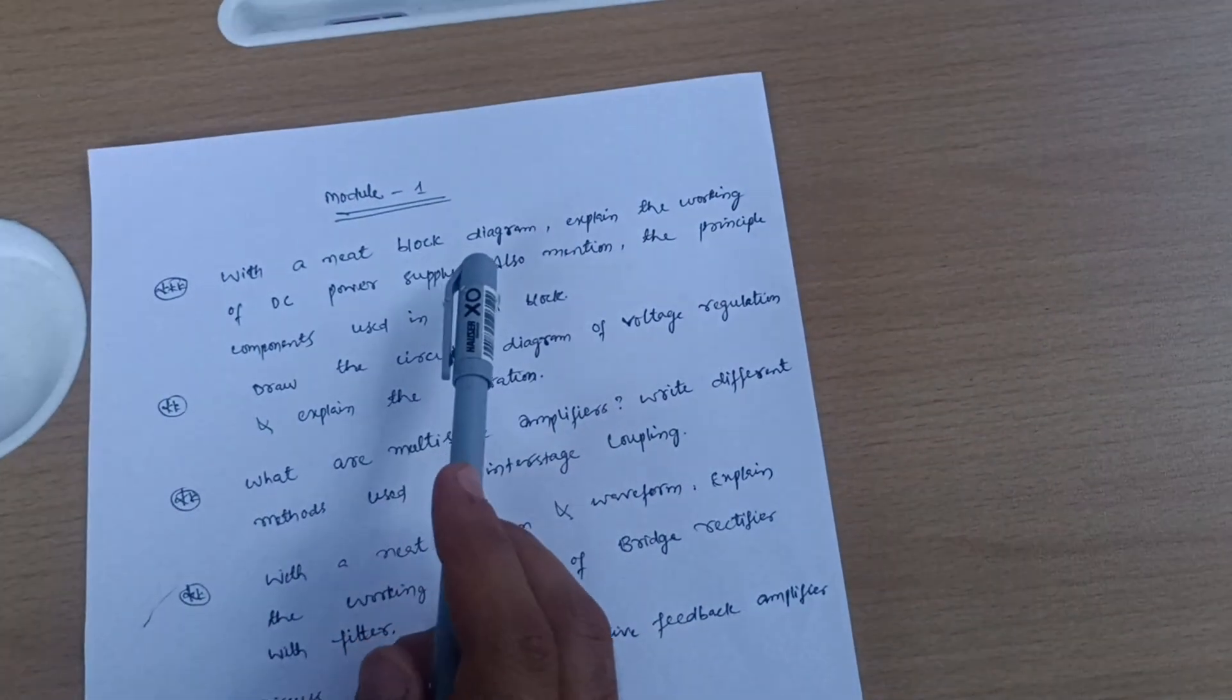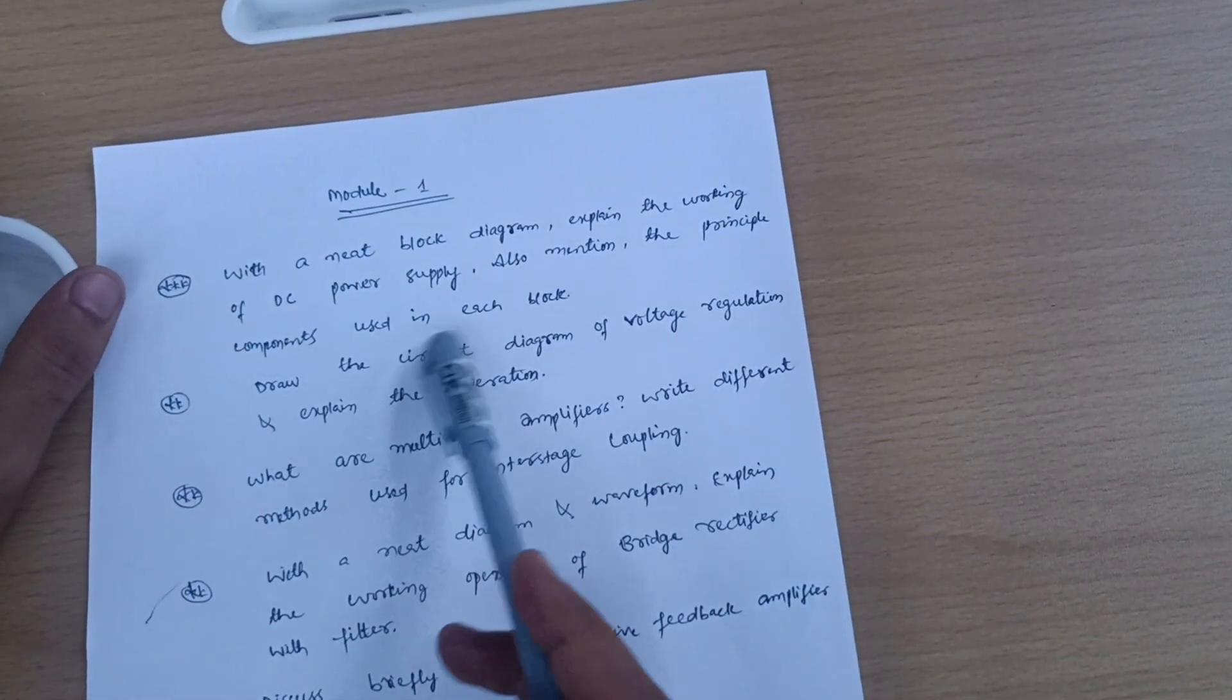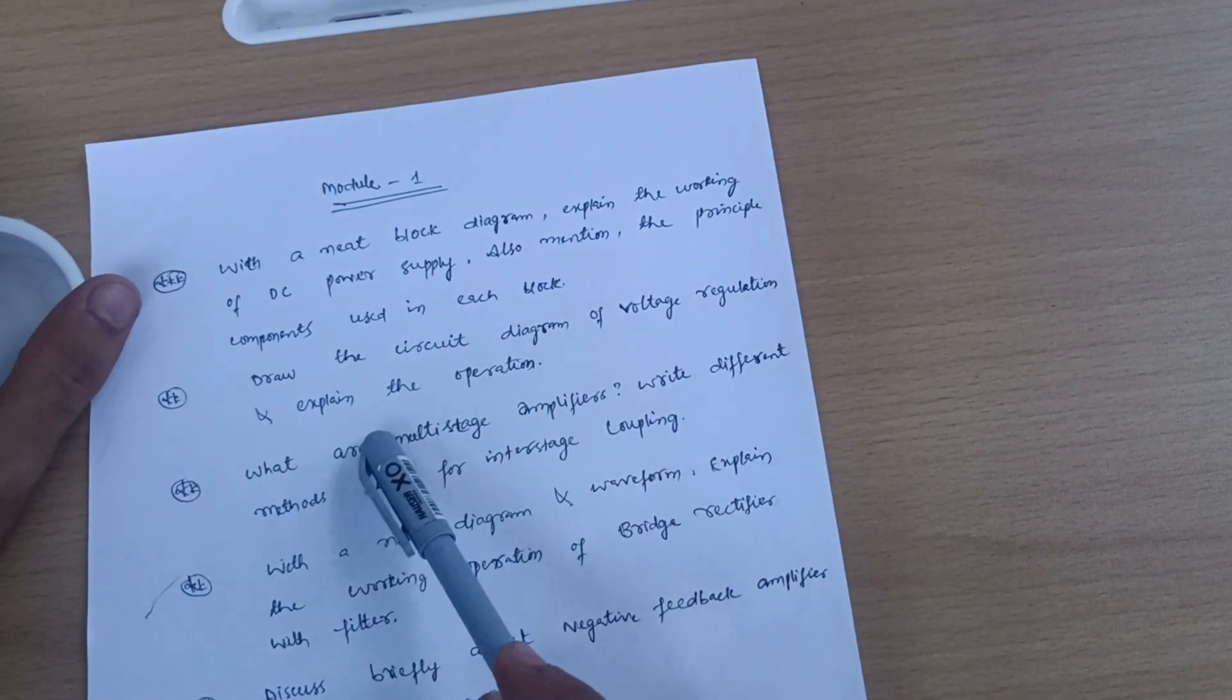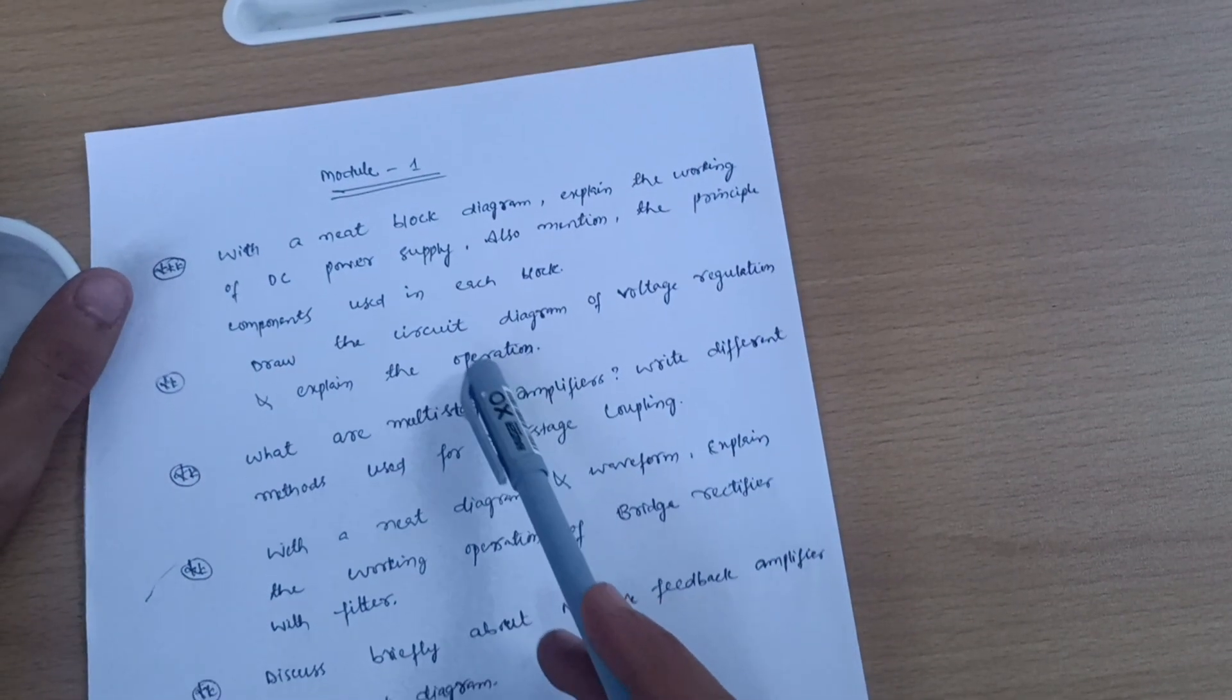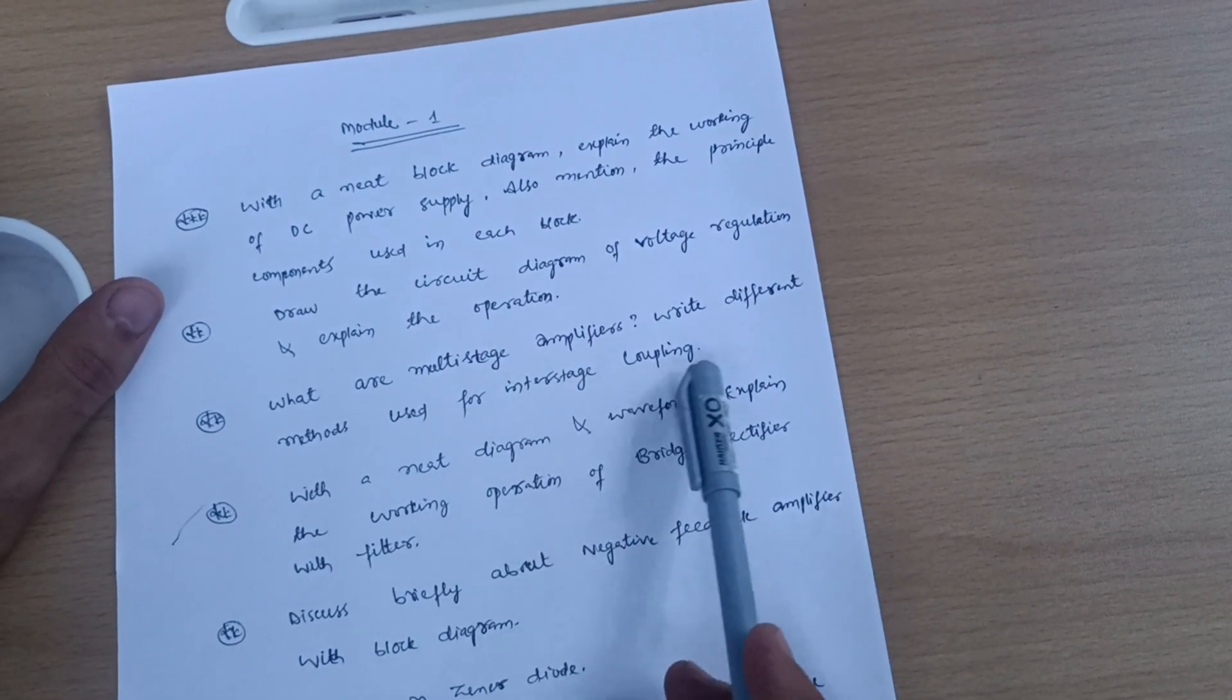With neat block diagram, explain the working of DC power supply and mention the principal components used in each block. Draw the circuit diagram of voltage regulation and explain the operation. What are multi-stage amplifiers? Write different methods used for interstage coupling.